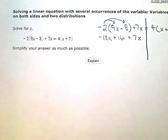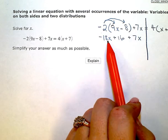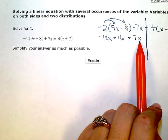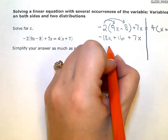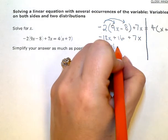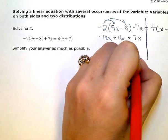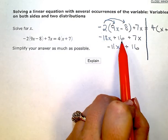Now I'm looking for like terms that I can combine, and I notice I have two x terms, negative 18x and 7x. So I'm going to combine these two like terms, negative 18x plus 7x gives me negative 11x, and then I still have my constant term, the plus 16.